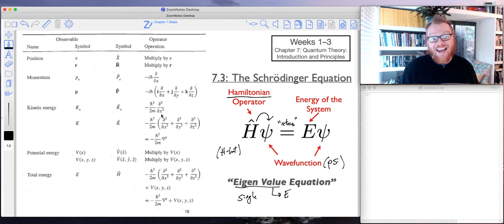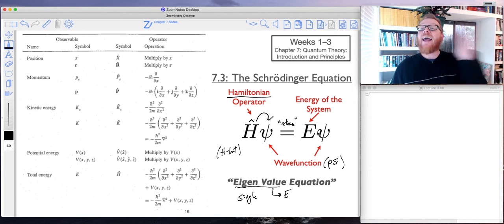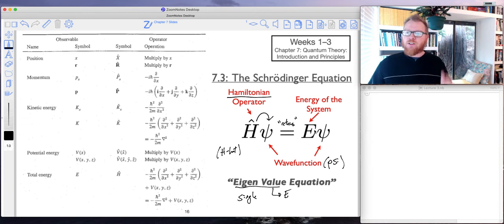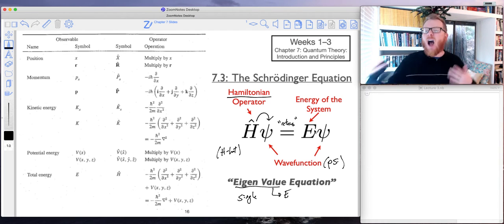So the way we would apply this kinetic energy operator is we'd have to follow the order of mathematics. So first we would take the second derivative with respect to x of the wave function. After we take that second derivative, then we would multiply by negative h-bar squared over 2m. And after we carry out that operation on ψ, we would get back the single-valued energy—a real number—and we would get back the original wave function.